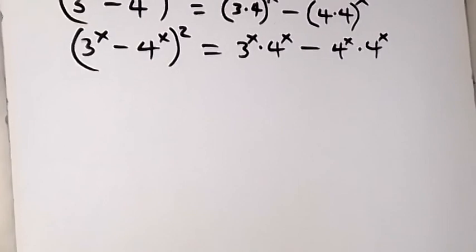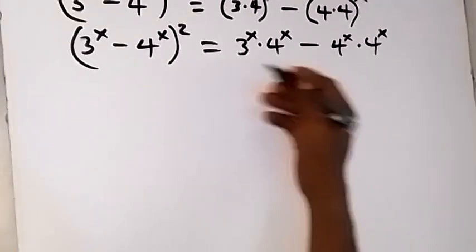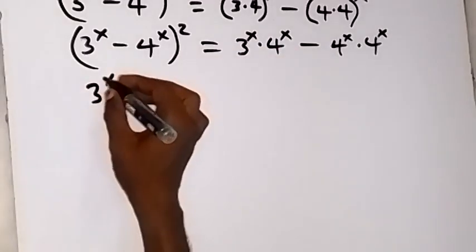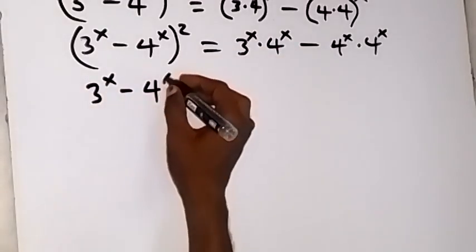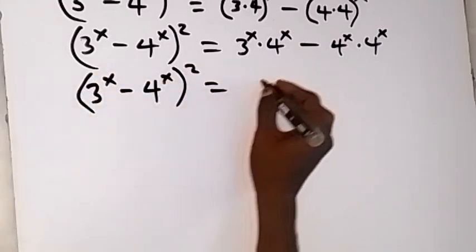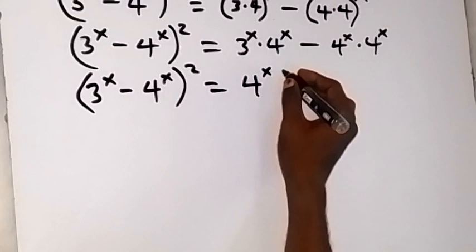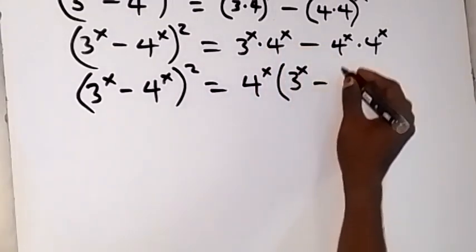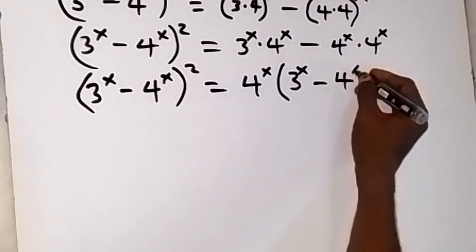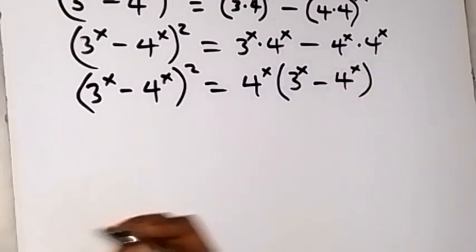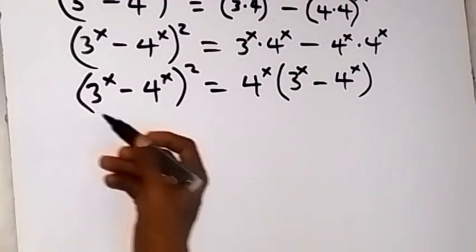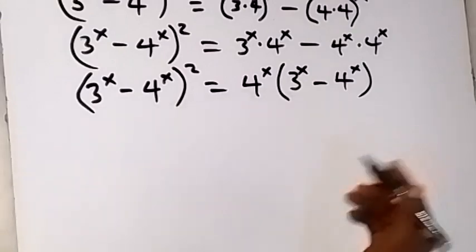There is something interesting here — we can factor what is common on the right-hand side. 4 raised to power x is common, so we bring one out. We have 3 raised to power x minus 4 raised to power x, all squared, equals 4 raised to power x times the bracket 3 raised to power x minus 4 raised to power x.